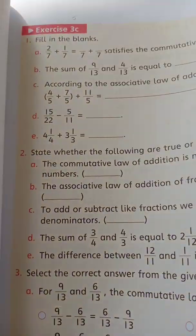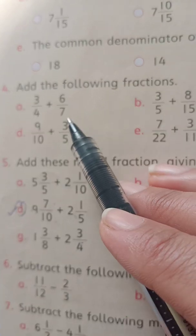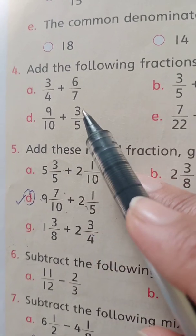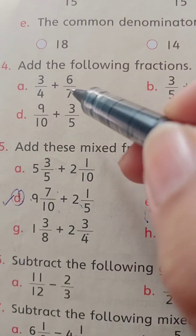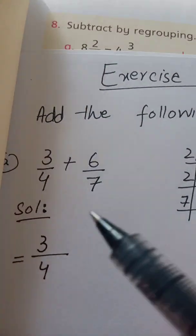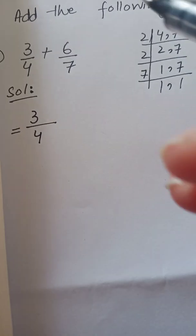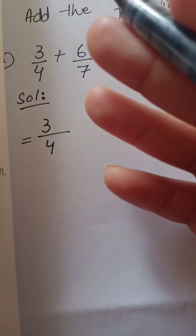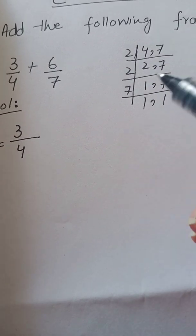Ab is se related hamaari exercise three C hai. Aaj hamen exercise three C start karni hai aur question number 4 aur 6 solve karenge. Question number 4: add the following fractions. Part A: 3 by 4 plus 6 by 7. Yeh unlike fractions hain — unlike fractions woh hoti hain jinke denominator different hon. Sabse pehle isko like fraction banana hai. Denominators different hain toh pehle dekho agar bada number dusre ka denominator ban sakta ho, warna LCM lete hain. Yahaan 4 aur 7 ka LCM lenge.